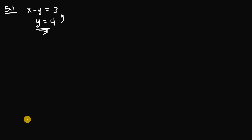So x minus y, where y is four, is equal to three. If I add four to both sides, then I get x is equal to seven. So the solution set for this is x equals seven and y equals four.